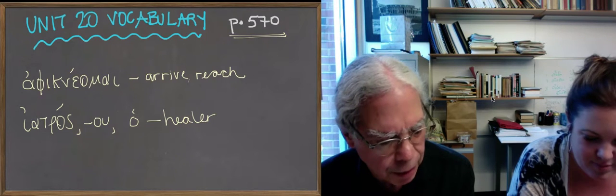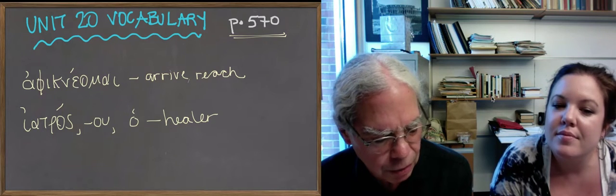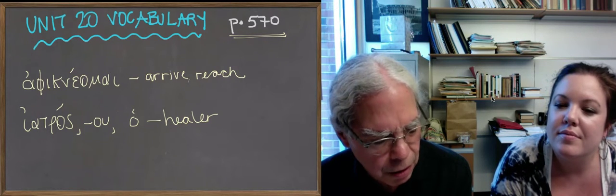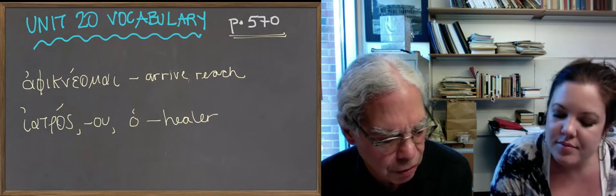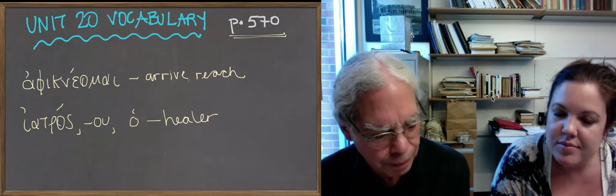There is the verb kemai, gives you only two principal parts, kemai and kesamai, the future of it, which means to lie or be placed, be set. I think it's well to think of it as functioning in Greek as the passive of as if they may.